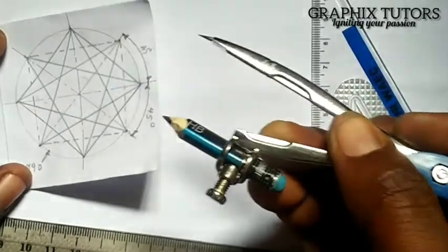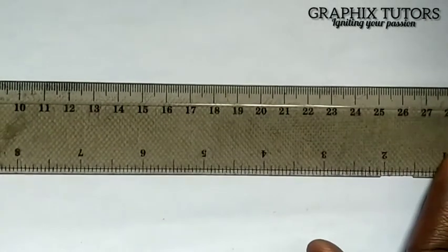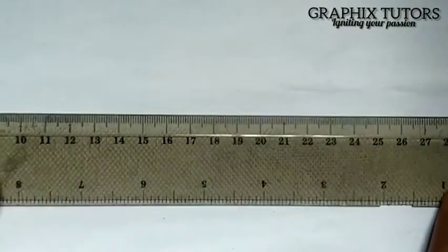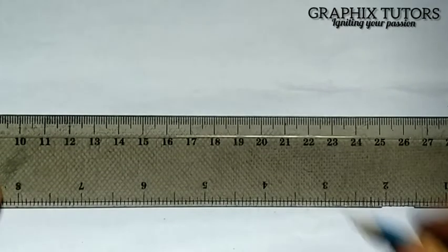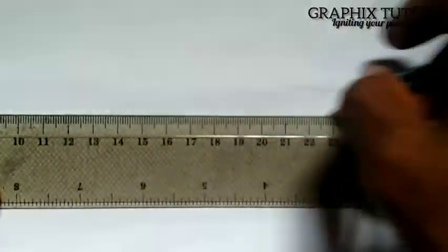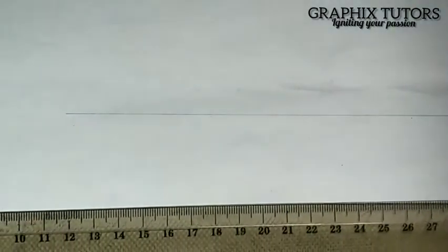What I'll do is I'll take the radius of 45 on my meter rule. Before you start, take your set square, place it like this, and after doing that, you draw your horizontal line.